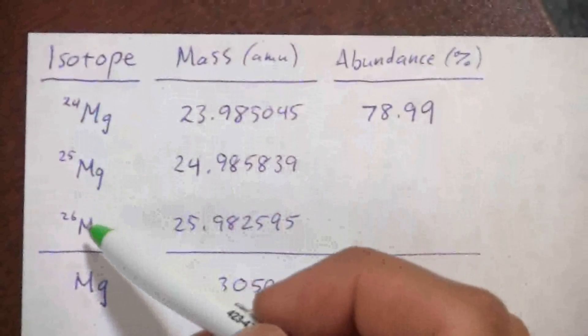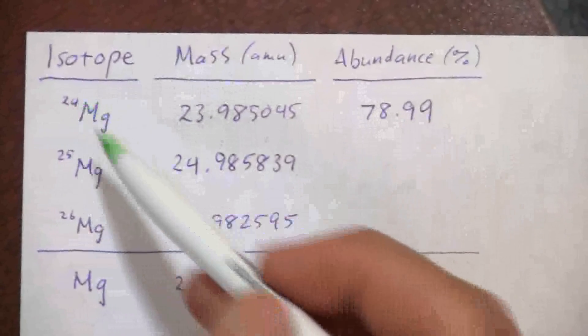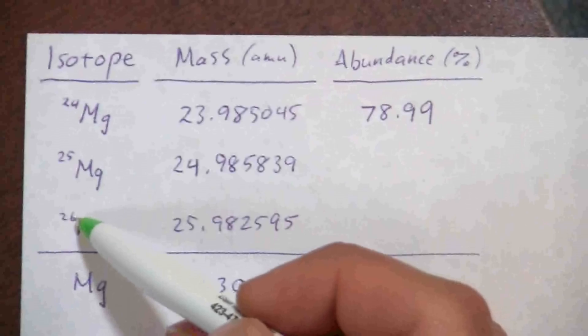So this is the magnesium. Magnesium has three isotopes naturally occurring: magnesium 24, 25, and 26.